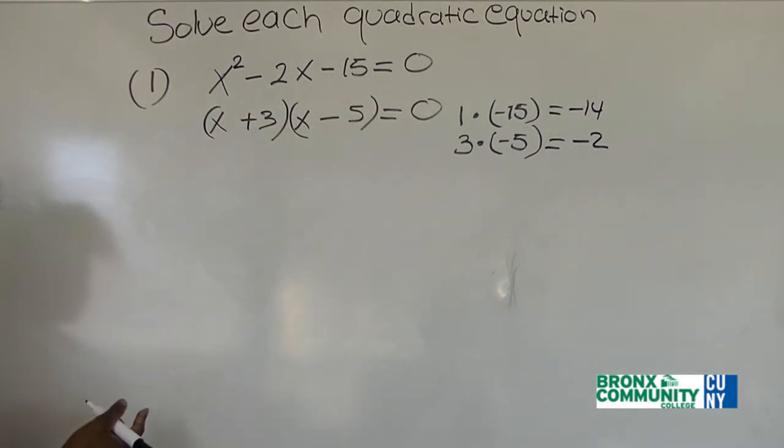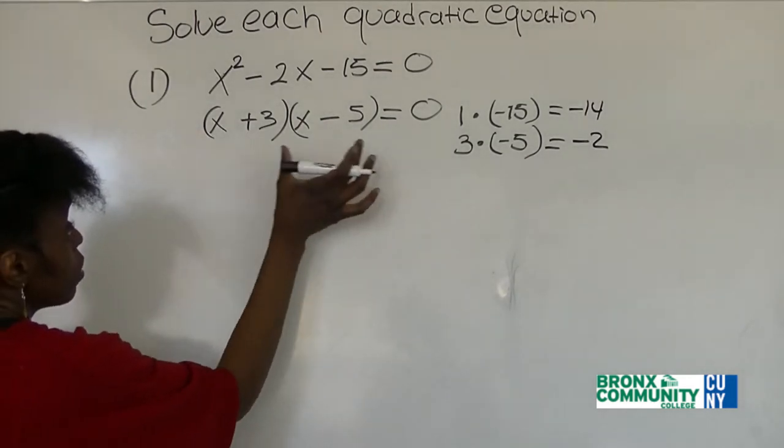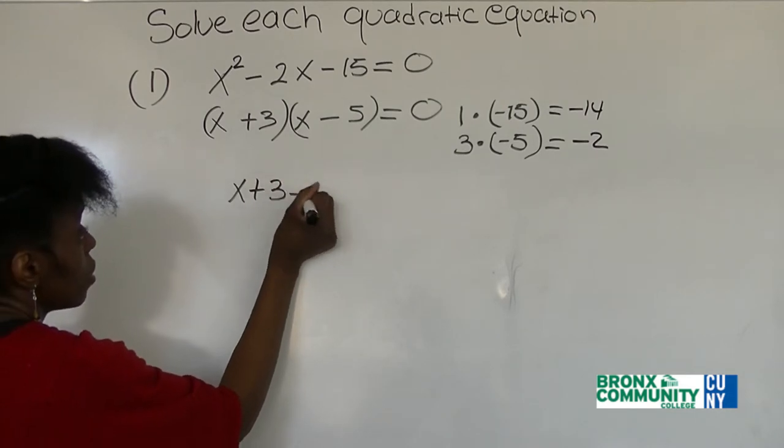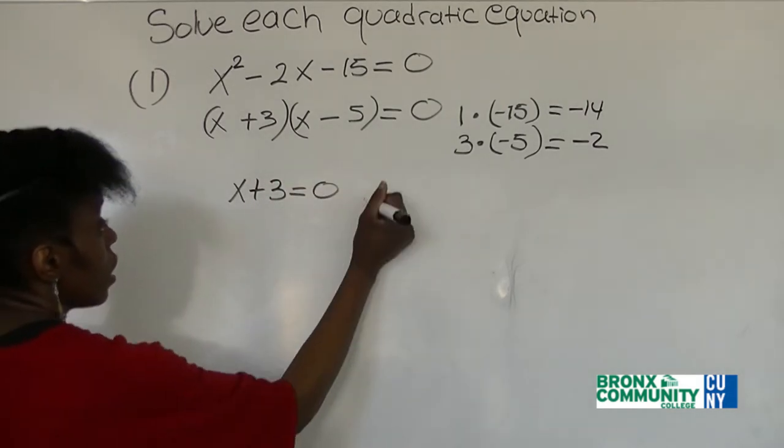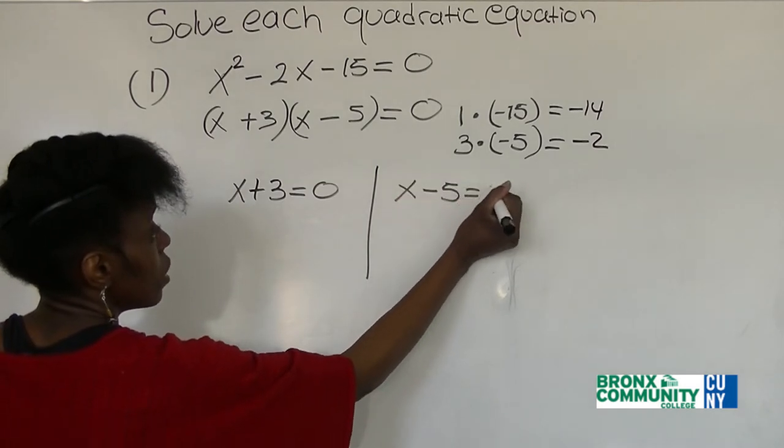And now from here we apply the zero product rule. The zero product rule, you set each factor equal to zero. So we have x plus 3 equal to zero, and also we have x minus 5 is equal to zero.